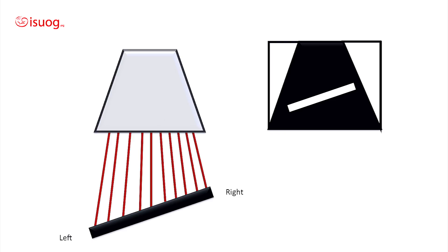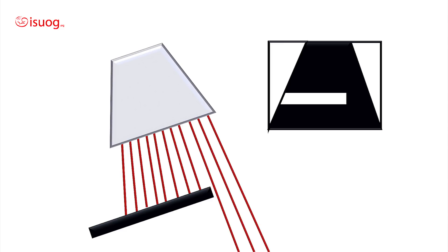Once you dip on the narrow aspect of the probe, the surface of the probe becomes parallel to the femur. Therefore, the femur will appear in a horizontal view on the screen. However, the left end of the femur will become outside the range of the ultrasound wave. To bring the femur to the center of the screen, you will need to slide on the narrow aspect of the probe. Please note that while sliding, you need to maintain your dipping.